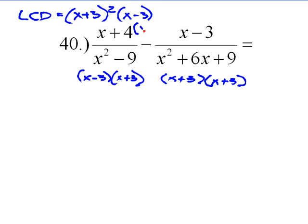So we have an x minus 3 and an x plus 3. We need to multiply this by x plus 3. We need one more x plus 3. We have x plus 3, x plus 3. We need to multiply this by x minus 3.